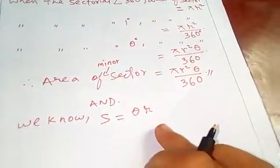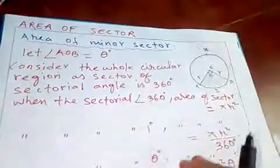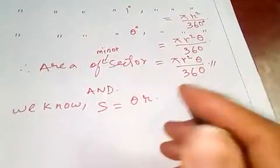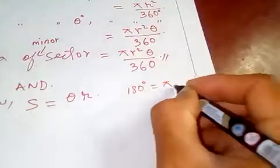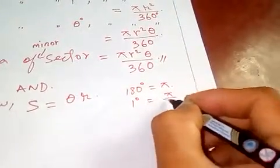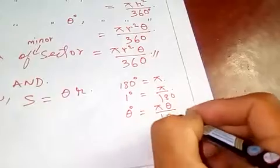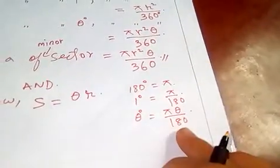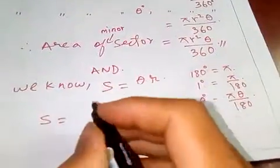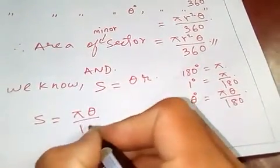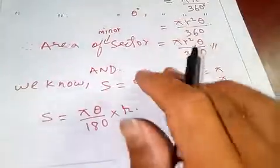The relation between arc length, radius, and sector angle is: arc length equals theta times radius. But this theta is in degrees, so we need to convert it to radian form. We know 180 degrees equals π, so one degree equals π over 180, and therefore theta degrees equals π θ over 180.